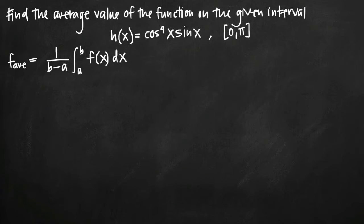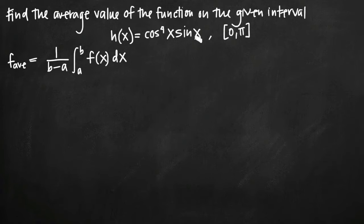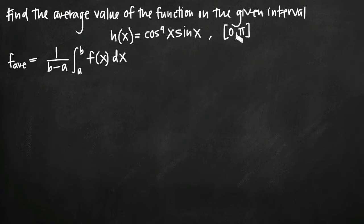Today we're going to be talking about how to find the average value of a function on a particular interval. In this particular problem, we've been given the function h of x equals cosine to the fourth of x times sine of x. We've been asked to find the average value of that function on the interval 0 to pi.